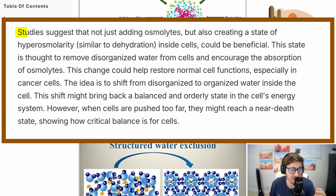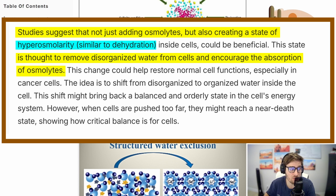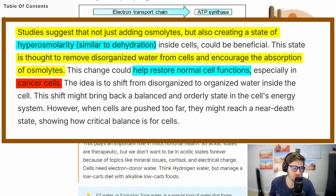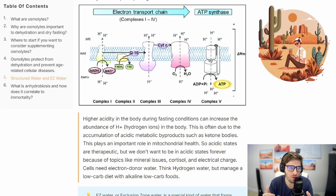Studies suggest that not just adding osmolites, but also creating a state of hyperosmolarity — which is dehydration inside cells — could be beneficial. This state is thought to remove disorganized water from cells and encourage the absorption of osmolites, which restructures the water and restores normal cell function, especially in cancer cells. Once osmolites are well balanced and your cells have uptaken enough of them, this is going to fix a lot of cellular processes and metabolic pathways. I do believe that dry fasting actually depletes and uses up a lot of the osmolites.